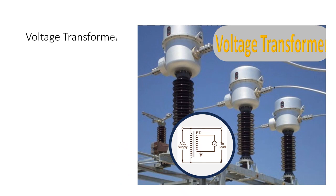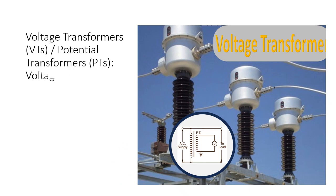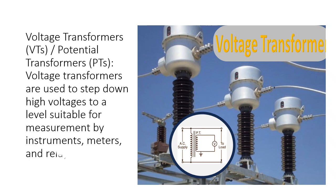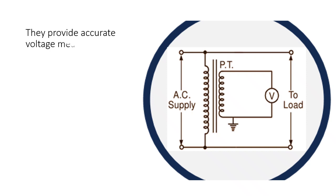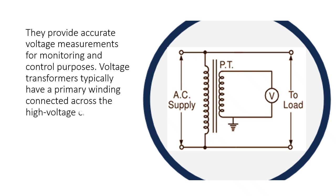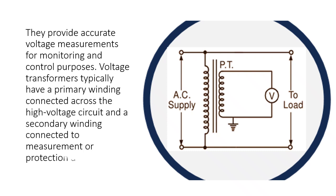Voltage transformers (VTs), also called potential transformers (PTs), are used to step down high voltages to a level suitable for measurement by instruments, meters, and relays. They provide accurate voltage measurements for monitoring and control purposes. Voltage transformers typically have a primary winding connected across the high voltage circuit and a secondary winding connected to measurement or protection devices.